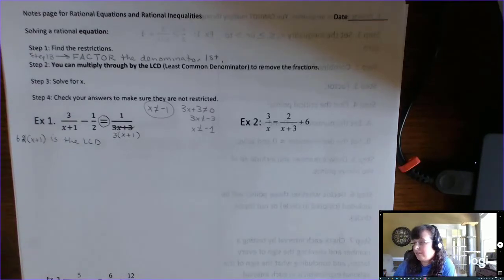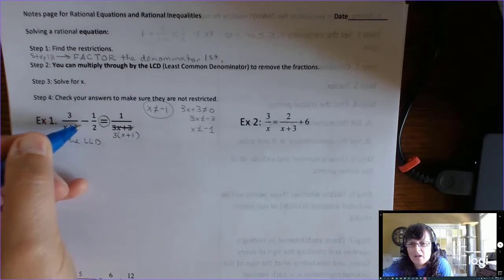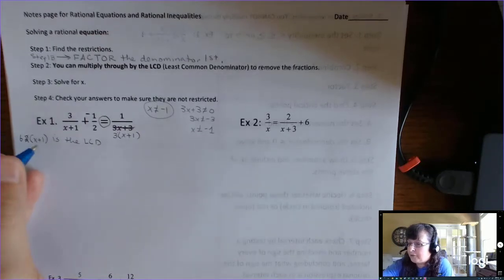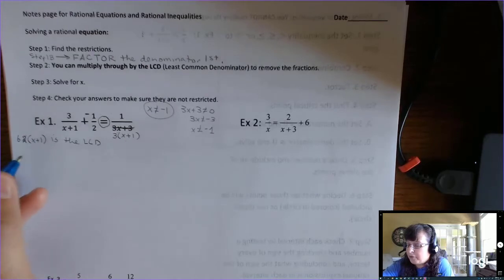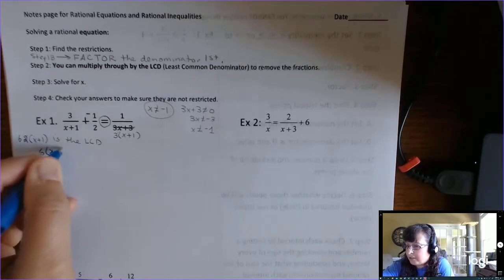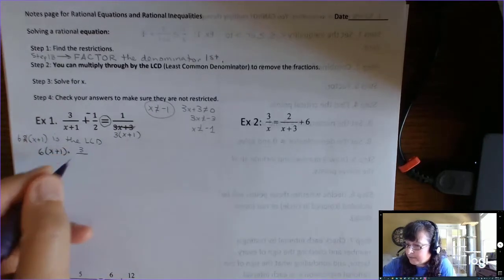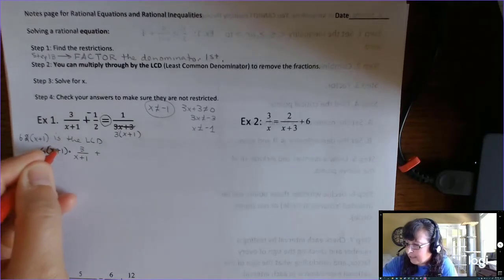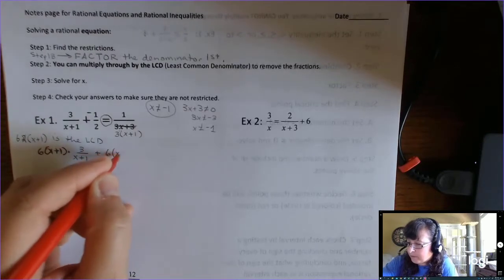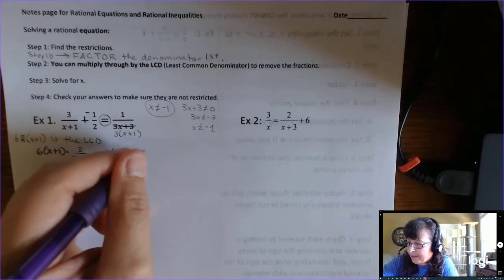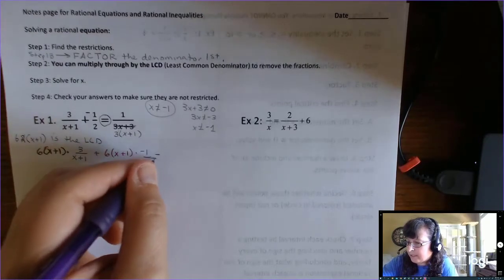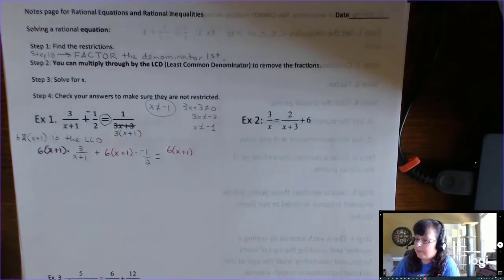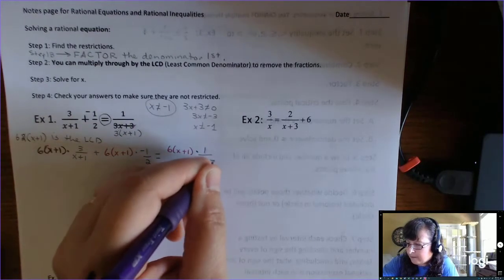Alright, the other thing that I highly recommend that some people may not recommend, but this minus gets lost all the time when you have to distribute, so I teach students to do plus and negative at the very beginning. Okay, so step 2. We found the LCD. We're going to multiply through by the LCD. So each one of these expressions is going to get multiplied by the 6x plus 1. And I meant that to be red.